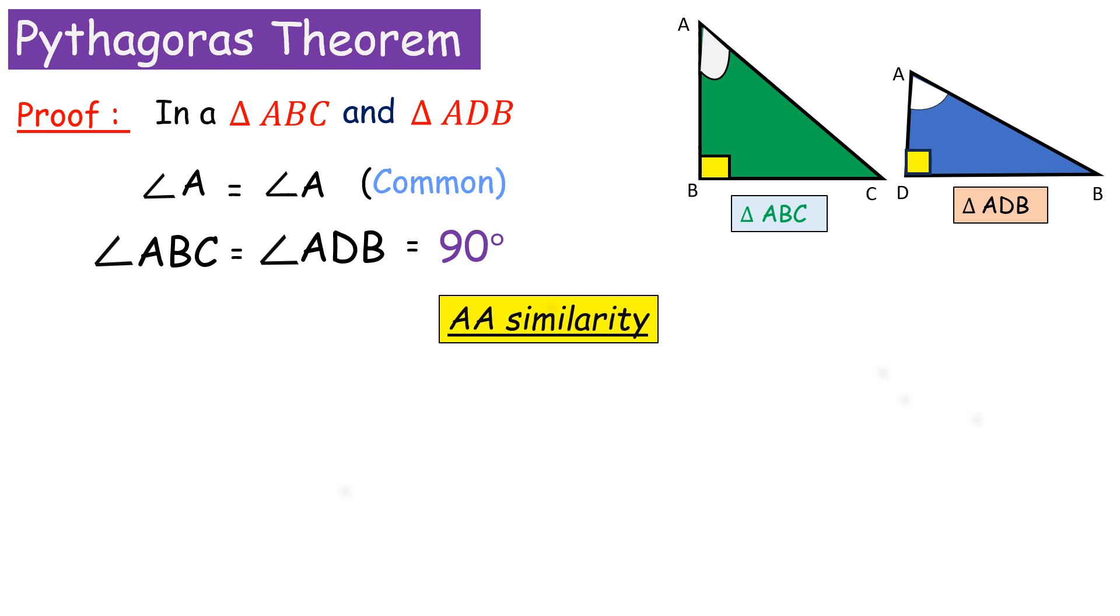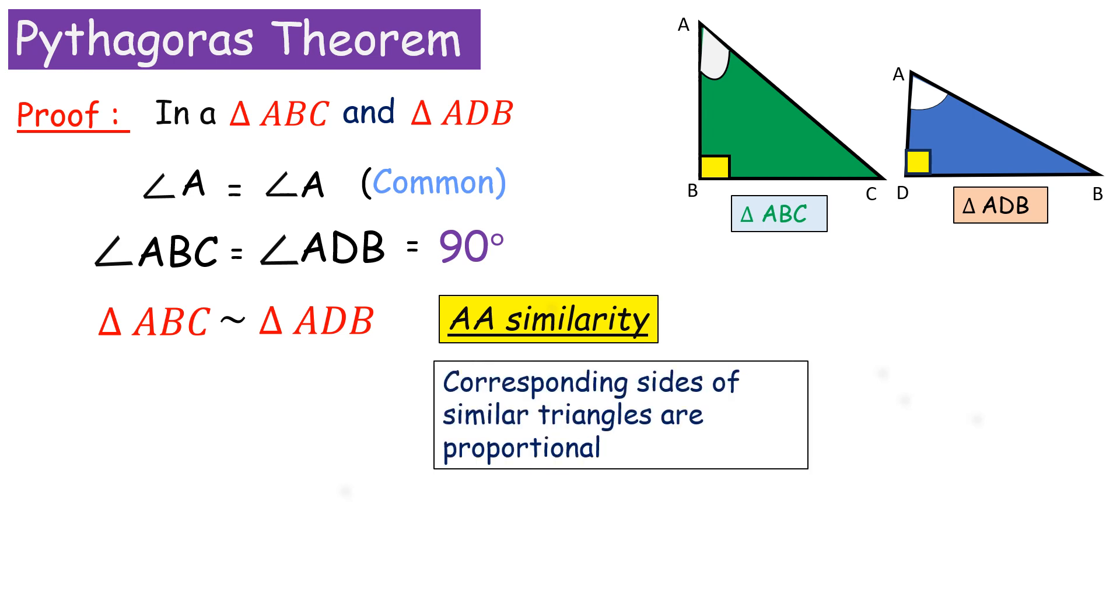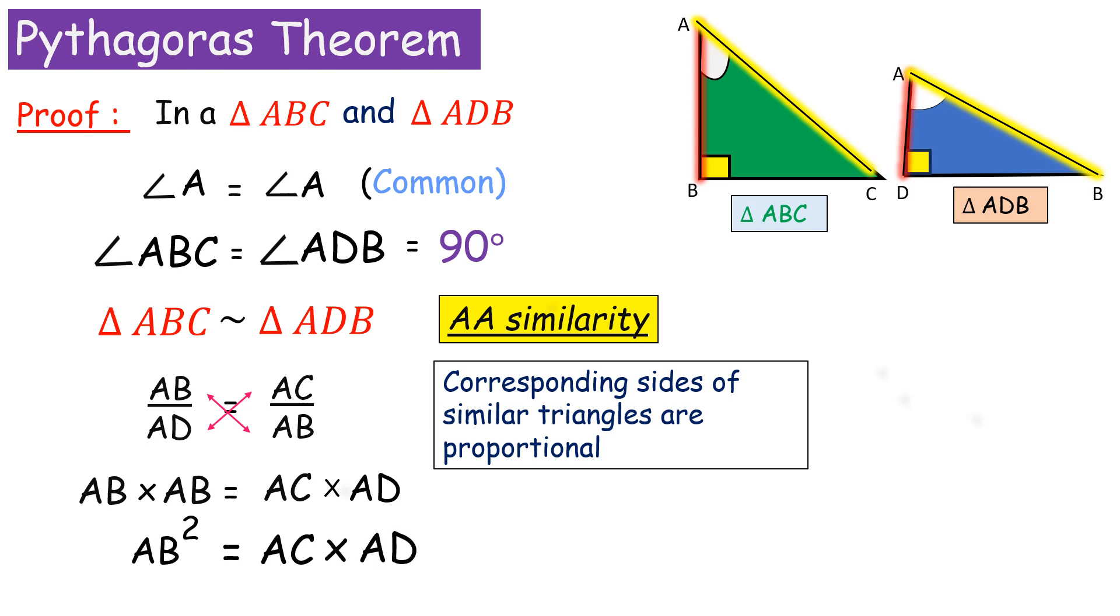Therefore, triangle ABC is similar to triangle ADB. Similarly, their sides would be proportional. AB by AD is equal to AC by AB. Cross multiply, we get AB² is equal to AC into AD. This is equation 1.